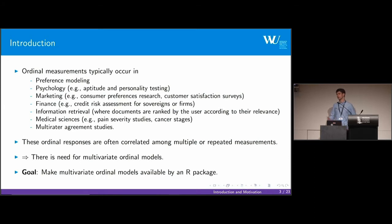In medical science one often observes pain severities or cancer stages, and these ordinal responses are often correlated among either multiple measurements, for example multi-rater agreement studies where several raters rate bottles of wine, or repeated measurements, for example in medical sciences where pain severities of patients are recorded over time. So there is definitely a need for a multivariate ordinal model. Our goal was to make multivariate ordinal models available for the R community by an R package.